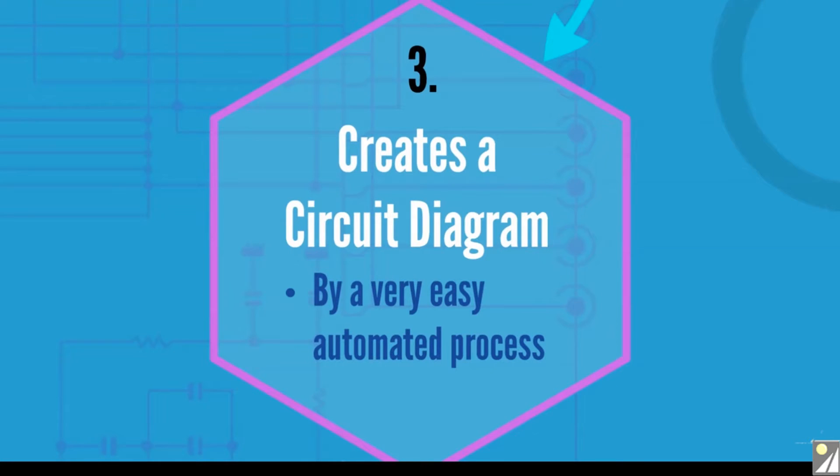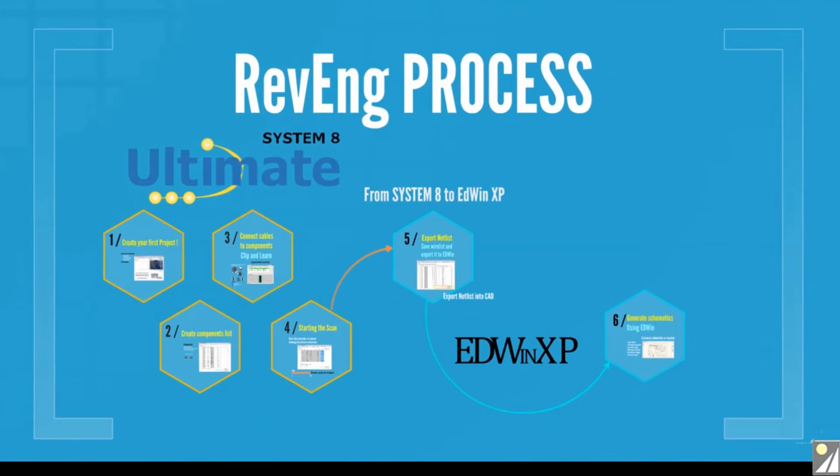Step 3: The netlist is exported to a professional schematic software package included with Revenge and the schematic is then automatically created. Let's look in detail at the steps involved.